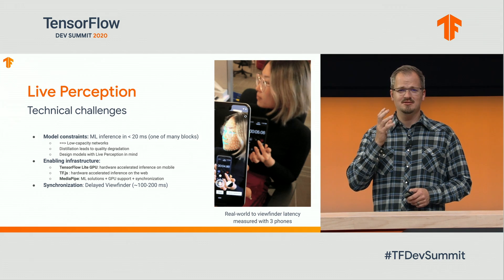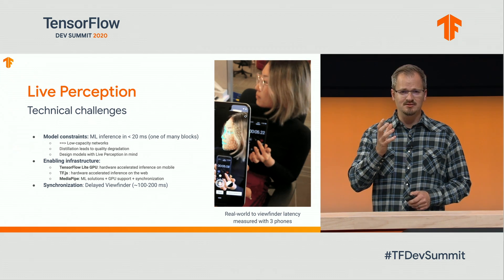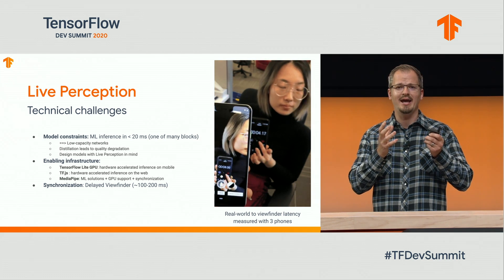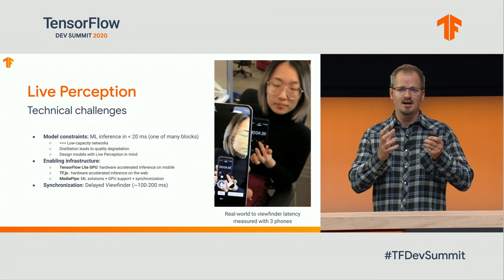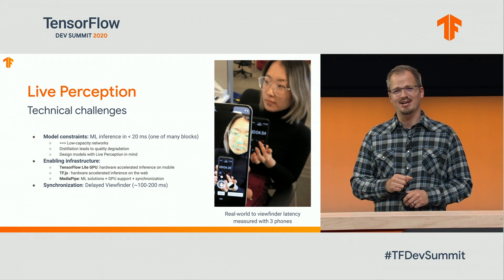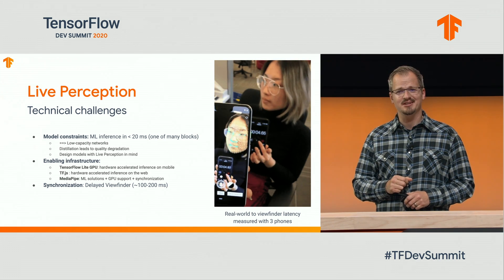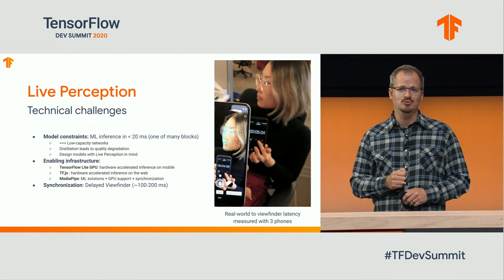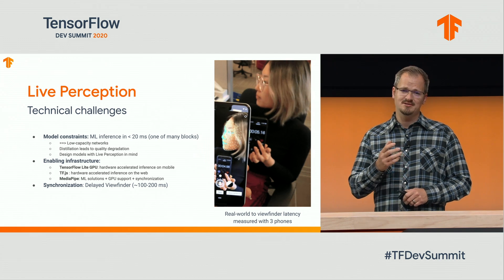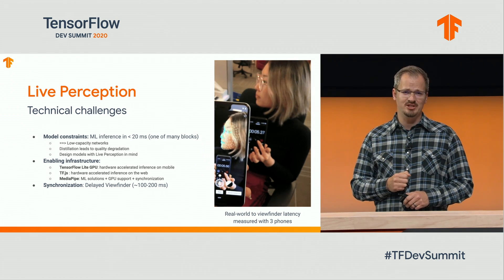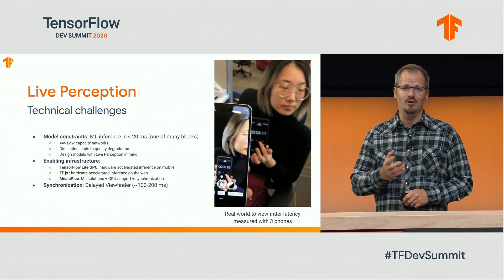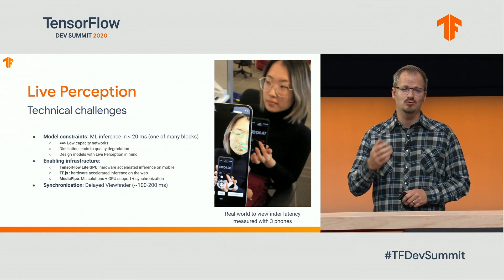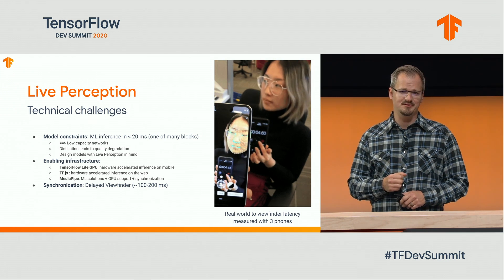It's not just the machine learning models, but it's also the infrastructure that you need to use, and they go hand-in-hand. By using cutting-edge acceleration techniques like TensorFlow Lite, GPU, or TensorFlow JS with its WebGL or XNN backends, you can achieve real-time performance.